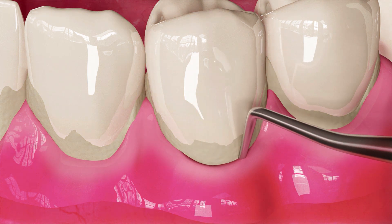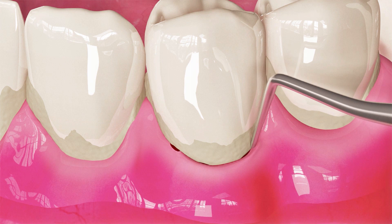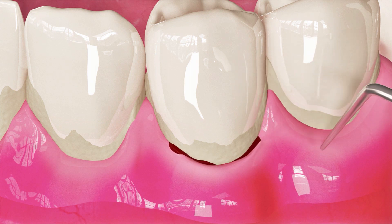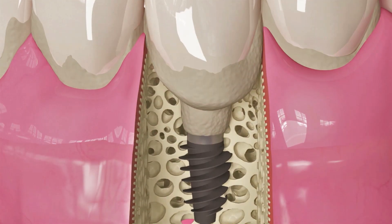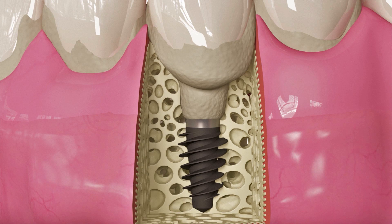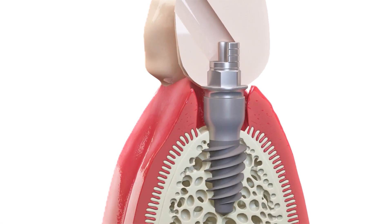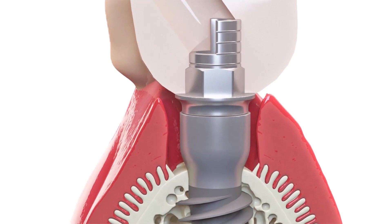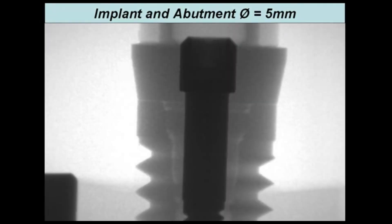Mucositis is characterised by redness, swelling, and bleeding on probing. The mucositis around implants, combined with low adherence to oral hygiene protocol, dramatically increases the risk of peri-implantitis. There will always be a micro-gap at the implant-abutment junction.